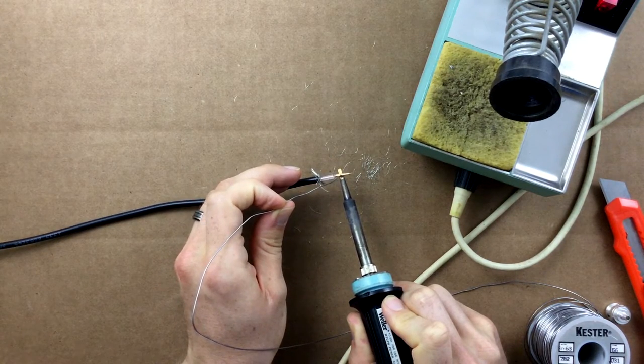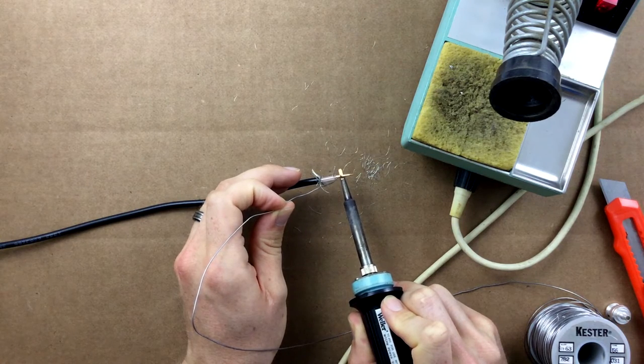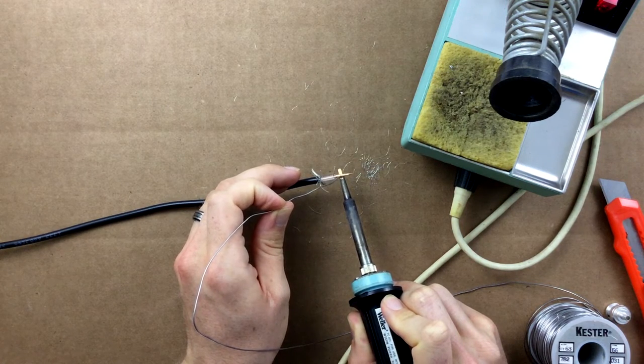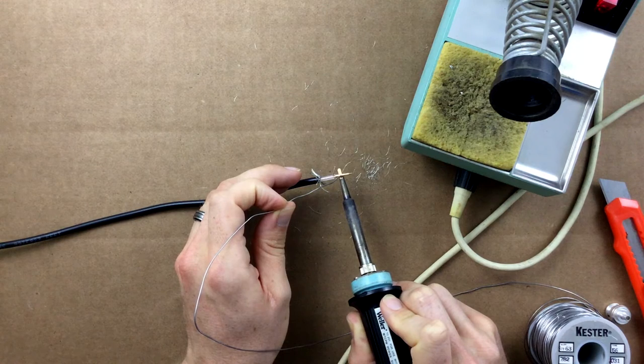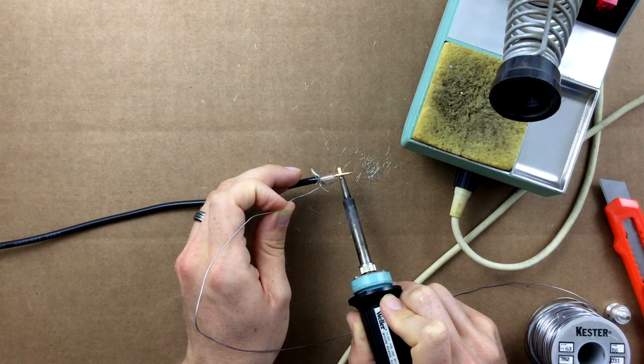Placing the iron under the pin allows for maximum heat transfer, speeding up the installation process. Make sure to heat the pin before touching the solder to it. The solder must flow inside the center pin.